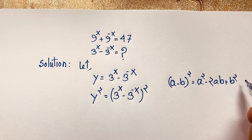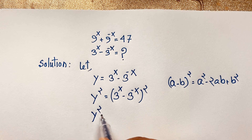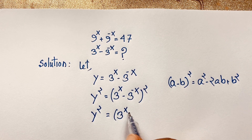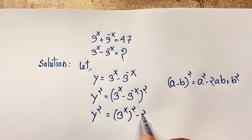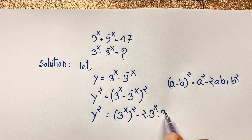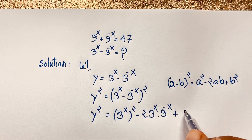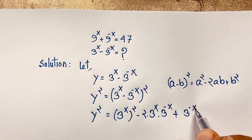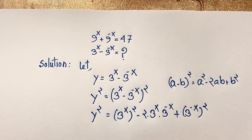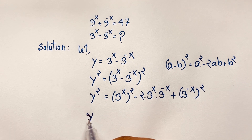If I apply this maths formula here, this expression will be y squared equals 3 to the power x, quantity squared, minus 2ab, where a is 3 to the power x and b is 3 to the power minus x, plus b squared, which is 3 to the power minus x, quantity squared.